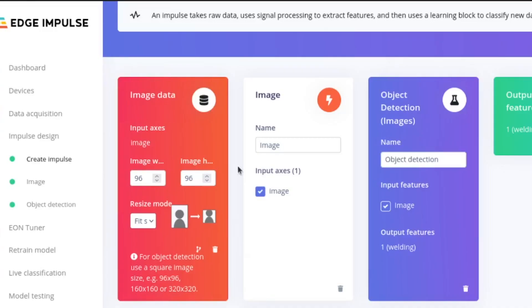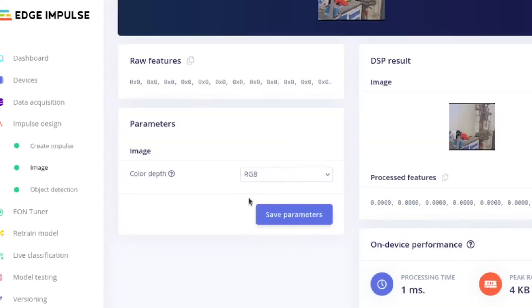However, in a lot of the cases, this application that we're going to showcase in this video will be enough for simpler applications with object detection. To delve a little bit more on the specifics of the models we have trained specifically for this video, they expect a 96x96 image input and they have been trained using the RGB color depth.